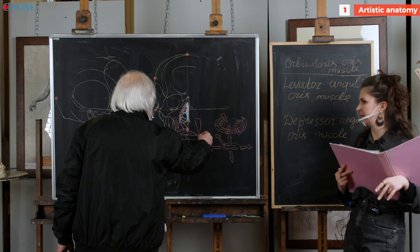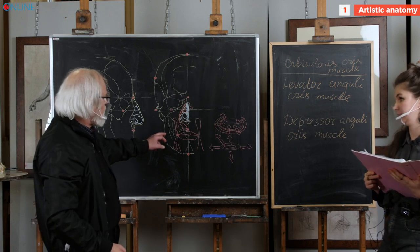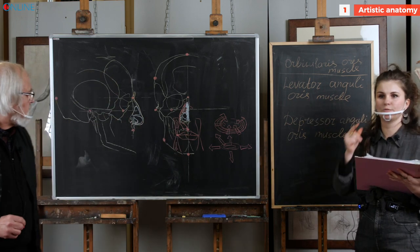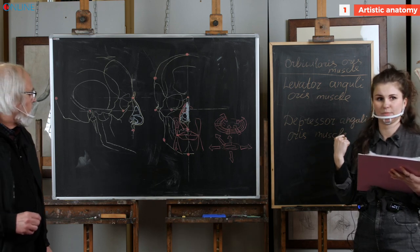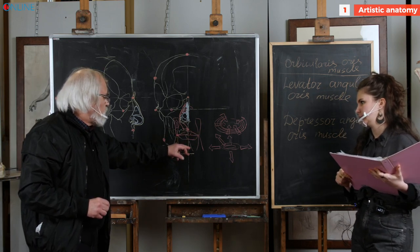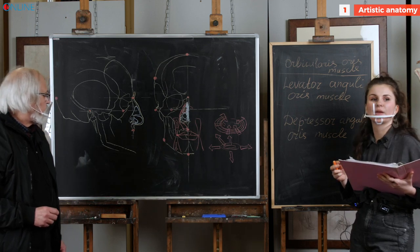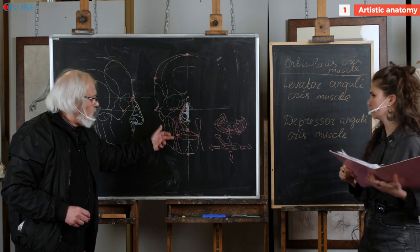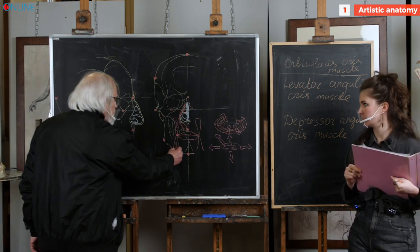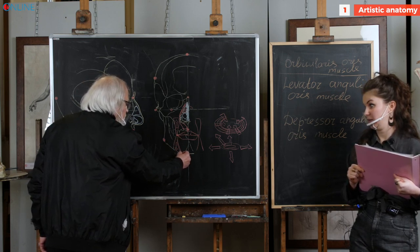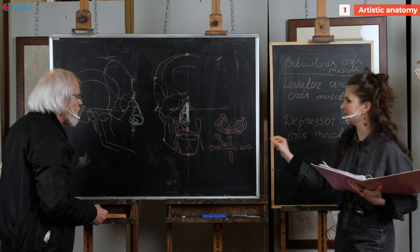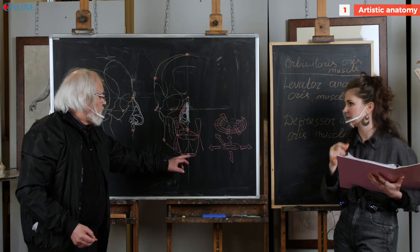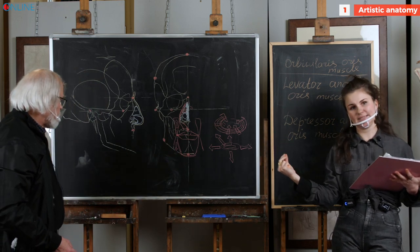The same muscles exist on the other side. This is the full image of four muscles that hold the angles of the lips and of the mouth. Together they create a muscle loop consisting of four elements. In some cases, separated fibers of these muscles can lay down over the chin area, and where they connect they create a fifth muscle.